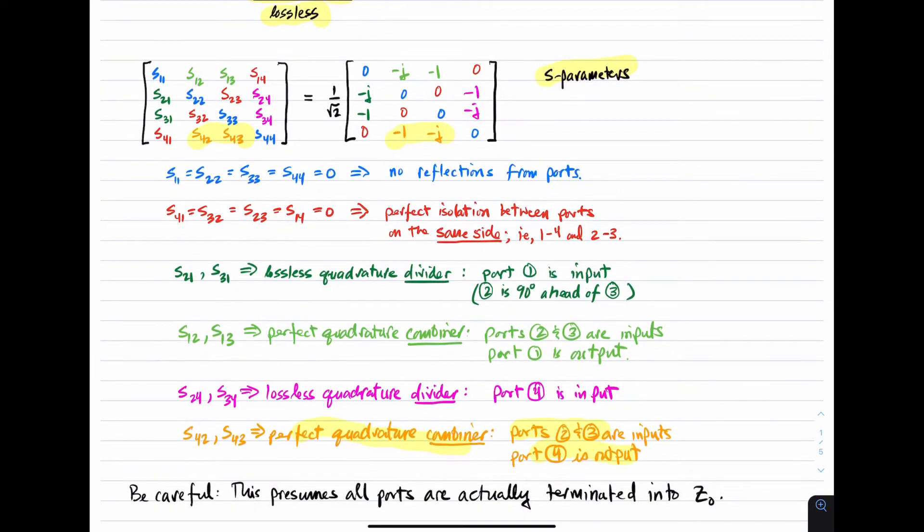Now be careful. All of this presumes that all ports are actually terminated into an impedance Z-naught. If the ports aren't terminated into Z-naught, then this is not going to be exactly right. So all of this depends on good matching at all four of the ports. And in that case, this is the set of S-parameters describing the behavior of this four-port device.